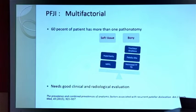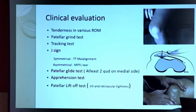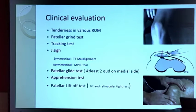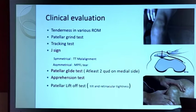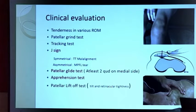What you need is a good clinical evaluation and a good radiologist who can evaluate your patellofemoral pathology very well. Clinical evaluation begins with the tenderness tracking test and the J sign. If the J sign is symmetrical, it means there is TT malalignment; if it is asymmetrical, it is an MPFL tear. Patella glide test, apprehension test — you can see a sudden contraction of the quadriceps on lateral stress — and you have to do a patella lift-off test to check for patella tilt and retinacular tightness.